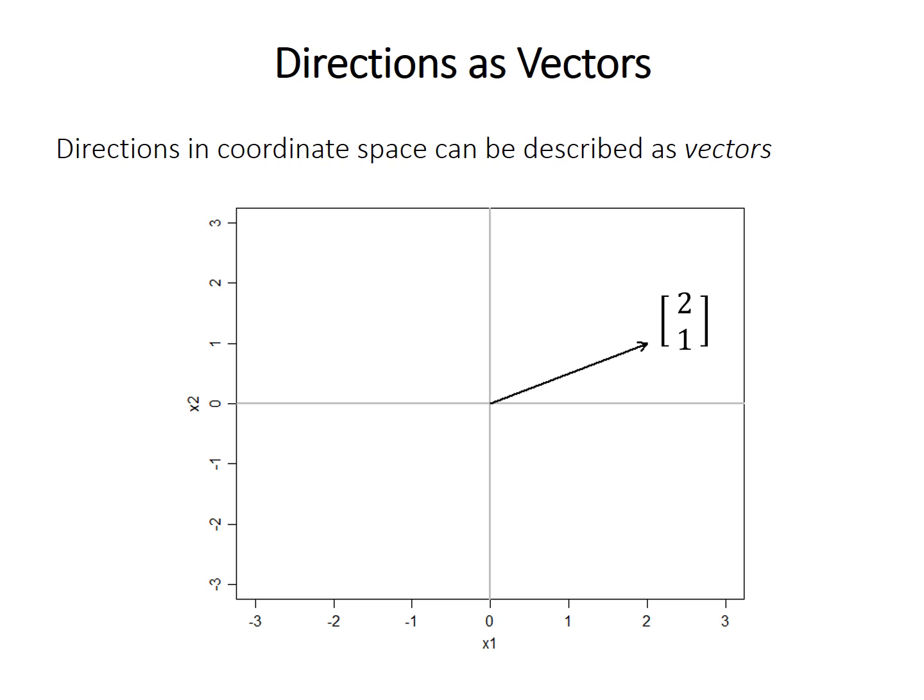The first important point is that we can describe directions in coordinate space as vectors. The arrow here illustrates the vector [2, 1], because it extends from the origin (0, 0) to the coordinates 2 on the first axis and 1 on the second axis. If we had more than two axes, we could have a vector with three, four, or five numbers, which illustrates its direction in that multidimensional space. Remember that we can describe a direction on a graph as a vector.